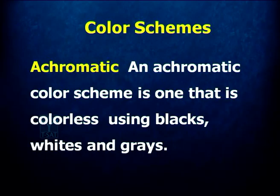Now we have different color schemes, and we are coming to visual art — what are the different kinds of color schemes and how artists use them. One is achromatic color. Achromatic color is that where you don't have any color — to put it straight, it is black and white and grays. By using black, gray, and white, you create or paint something, and that is called an achromatic color scheme.